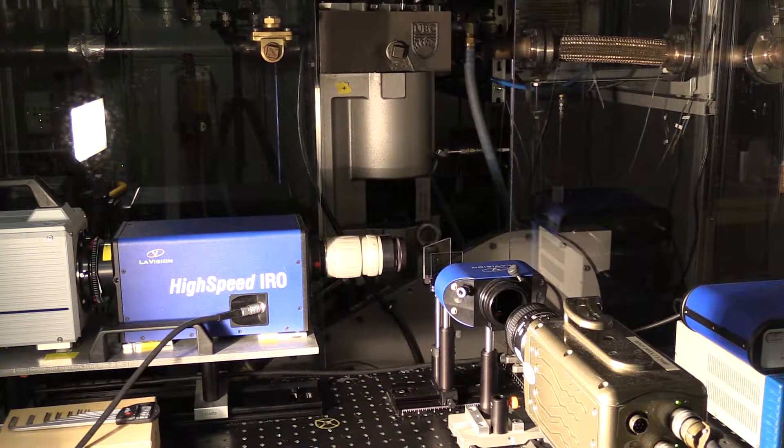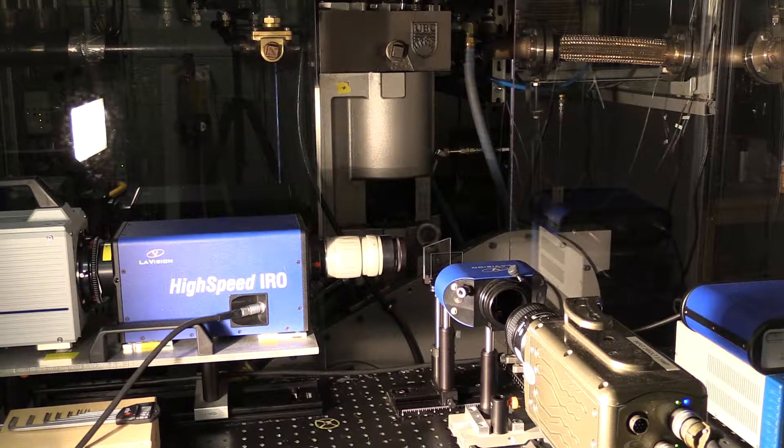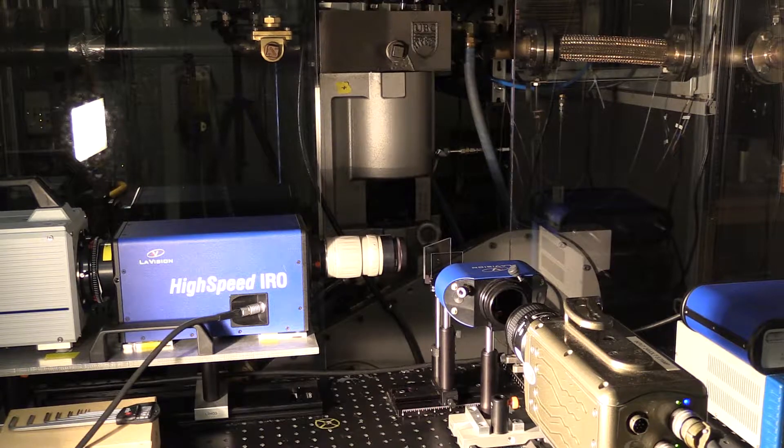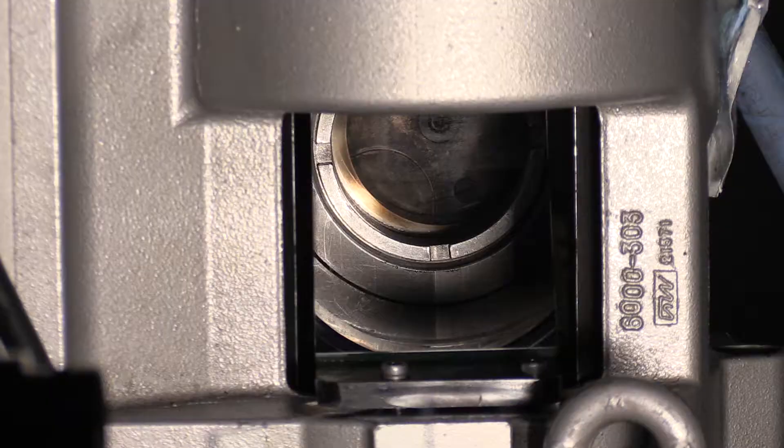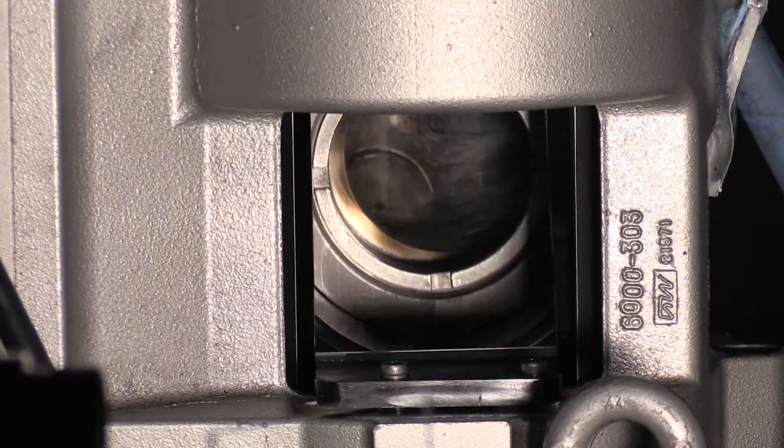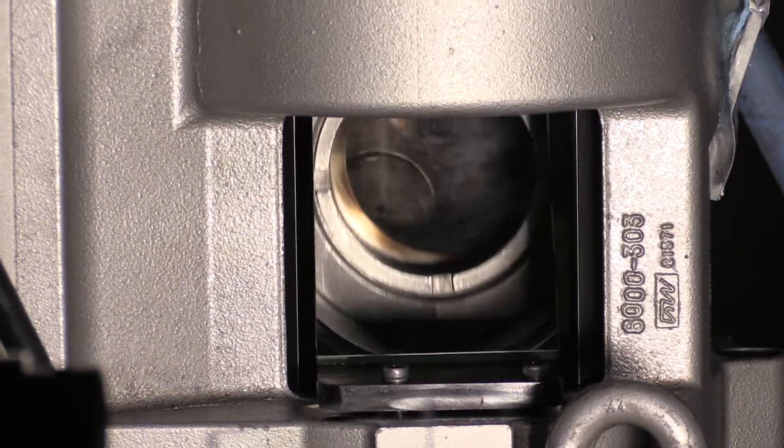A typical test for us to image inside the combustion chamber is quite an involved process. First we have to prepare the engine which can take quite a bit of time, days or more, and then when we actually run the test we have to spin the engine up to speed, the piston starts moving, but because we have windows and mirrors inside the engine we can't run it continuously like you would in a normal engine.